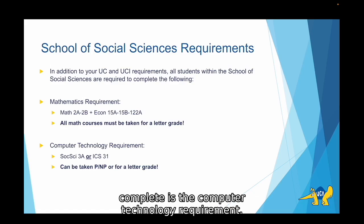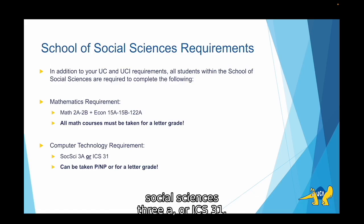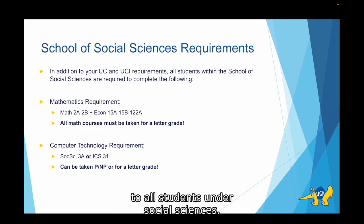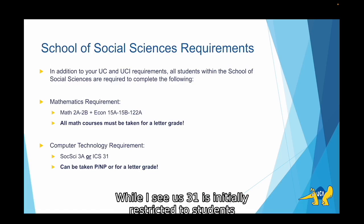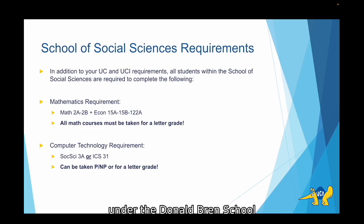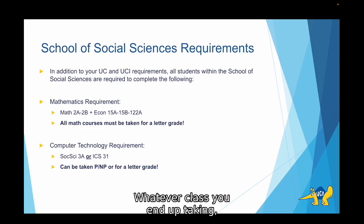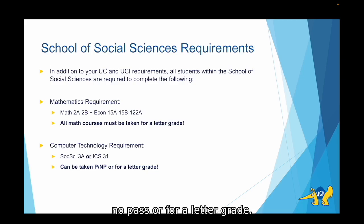The other school requirement you will need to complete is the computer technology requirement. For this requirement, you can take Social Sciences 3A or ICS 31. We generally recommend that our students take Social Sciences 3A, just because that class is open to all students under Social Sciences, while ICS 31 is initially restricted to students under the Donald Bren School of Information and Computer Science. Whatever class you end up taking, SOCI 3A or ICS 31, can be taken for pass-no-pass or for a letter grade.